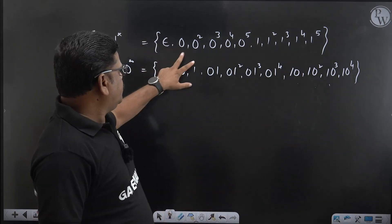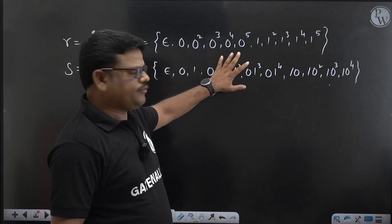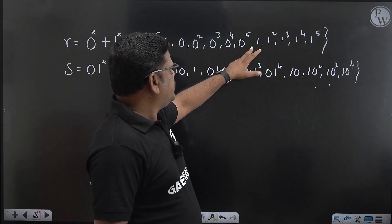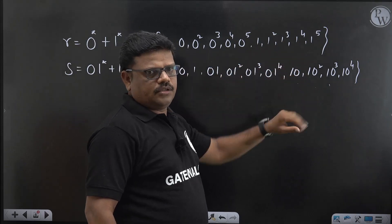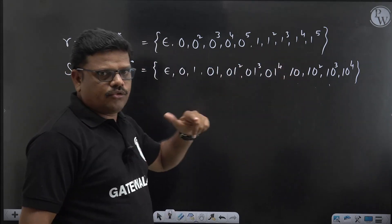1 zero, 2 zeros, 3 zeros, 4 zeros, 5 zeros up to 5. From this a single 1, 2 ones, 3 ones, 4 ones, 5 ones, because our required thing is less than equal to 5, length is equal to 5 only.